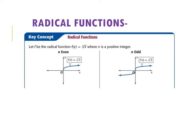These are just generally what your radical functions look like. If you have an even index, it's this little number right outside the square root symbol. If you have an even index, it's going to look something like that. If you have an odd index, remember it's this number, it'll look something like that.